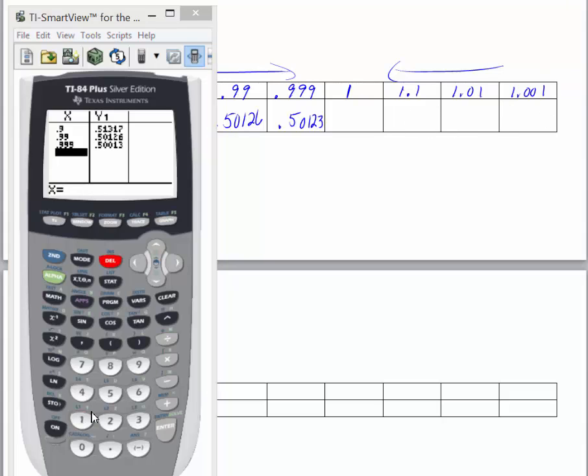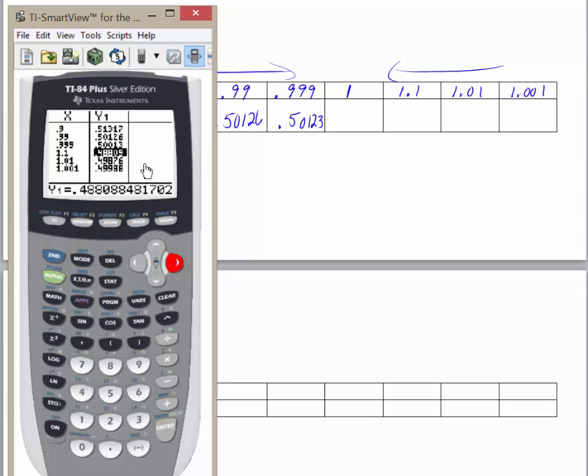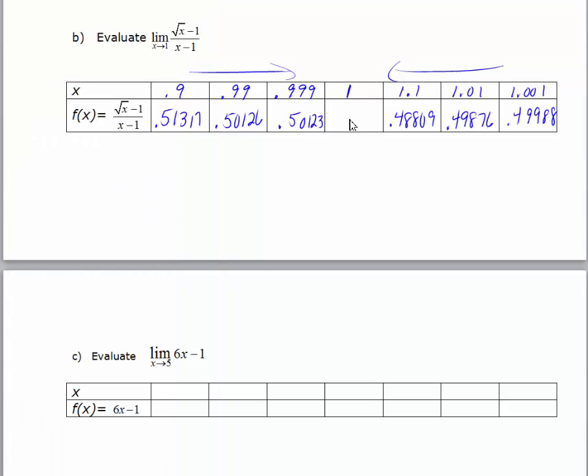I'll go ahead and evaluate the three values to the right. 1.1, 1.01, and 1.001. And I'll go ahead and write these in my table. I will highlight them so I can get them rounded out to 5 decimal places. Now, we know that 1 is not in the domain, so there's no y value. But it appears here to me that as x approaches 1, the y values are approaching a half. So we would say the limit as x approaches 1 of the square root of x minus 1 over x minus 1 is equal to a half. And in the next section, we're going to prove this analytically also.